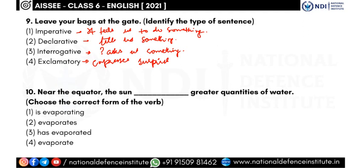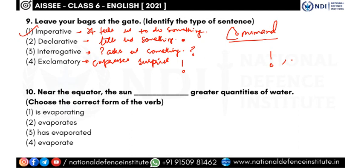Imperative is a command — it tells us to do something. 'Leave your bags at the gate' — someone is instructing us to leave the bag near the gate; it's a command. So the sentence is imperative. Imperative sentences can end with an exclamatory mark or a full stop. The answer is imperative.